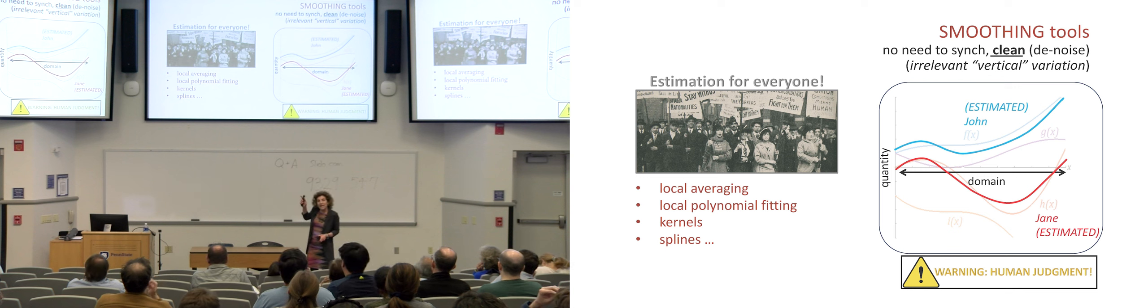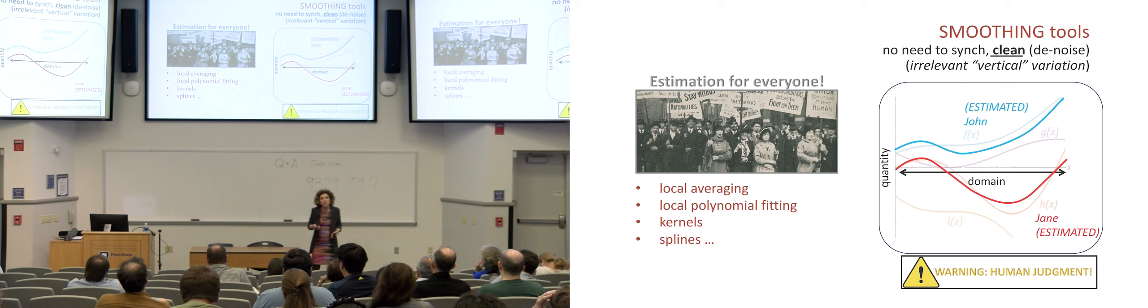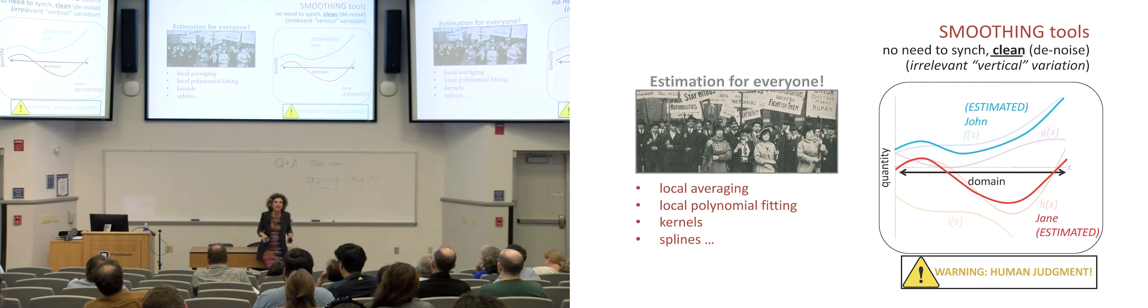I need to make a warning here and it's one of two that I'll make during the lecture. When we do smoothing, we're using a knob. A knob by which we modulate what we consider noise to be cleaned up and what we consider a systematic signal as we build the curves. There are approaches that one can use to make this tune this knob in as objective and data-driven a way as possible, but there is always an element of subjectiveness in this. There's an element of human judgment.